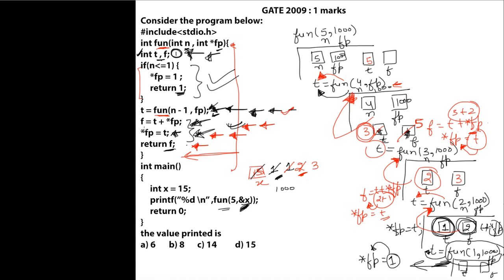In fun(5), t stores 5. We execute f = t + *fp, which is 5 + 3 = 8, so f stores 8. Then *fp = t stores 5 at location 1000. We return f = 8. This value 8 will be printed by the program.